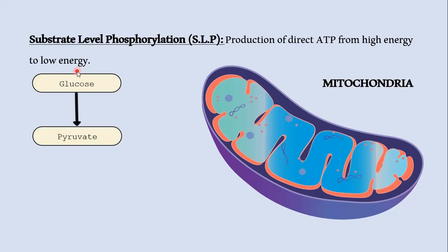One glucose molecule or one sucrose molecule is converted into two molecules of pyruvate, releasing two ATP and two NADH. Basically, four ATPs are produced in the energy-yielding phase, but two ATPs are utilized in the energy investment phase, so the total net production of ATP from glycolysis is two ATP. This pyruvate then moves toward the matrix of mitochondria where the Krebs cycle runs.